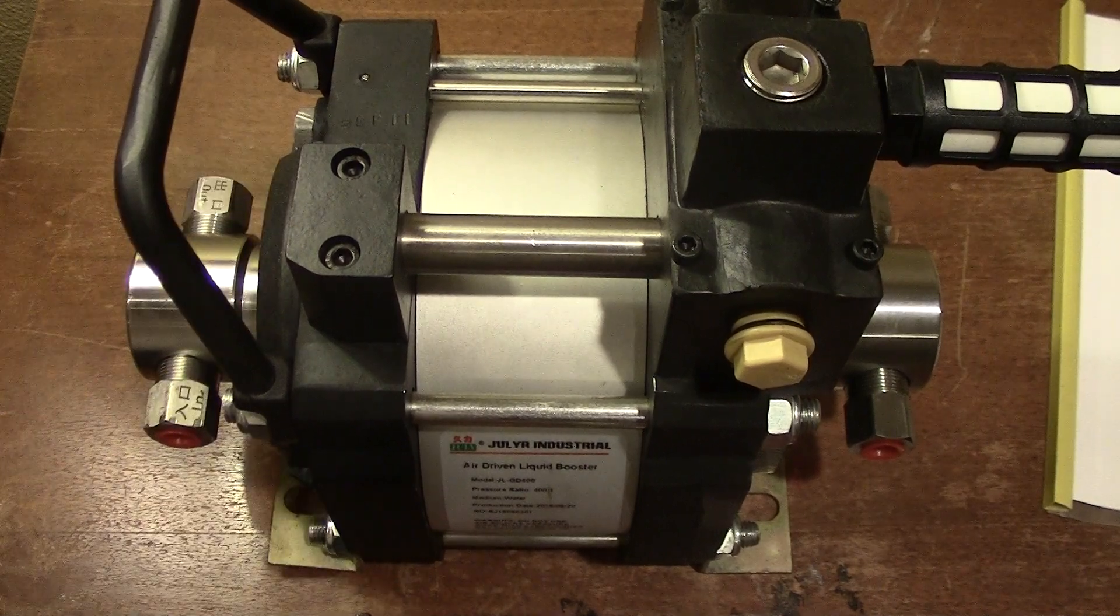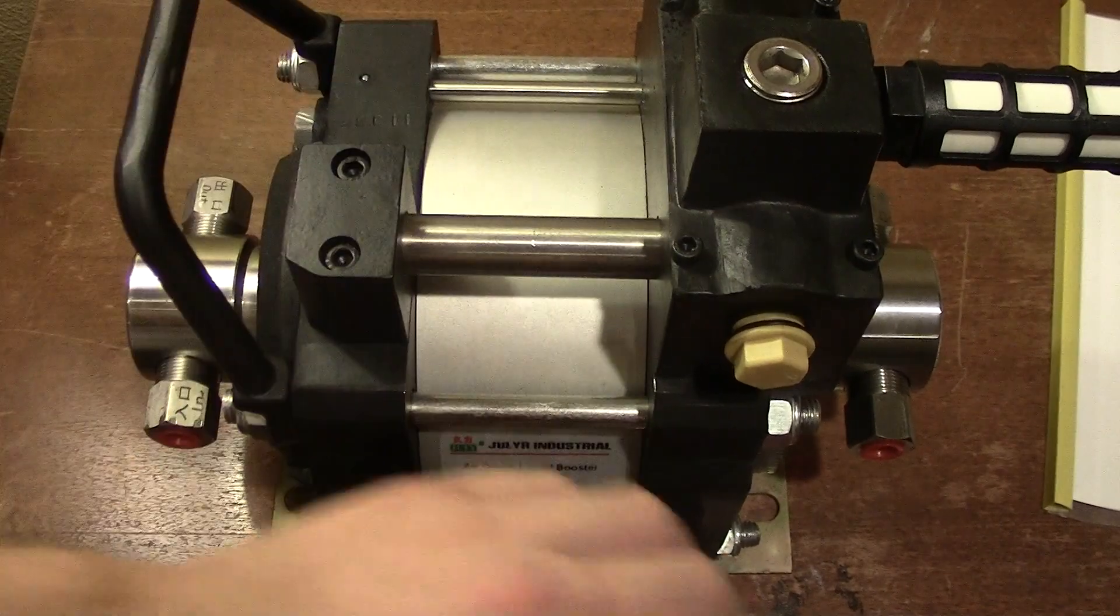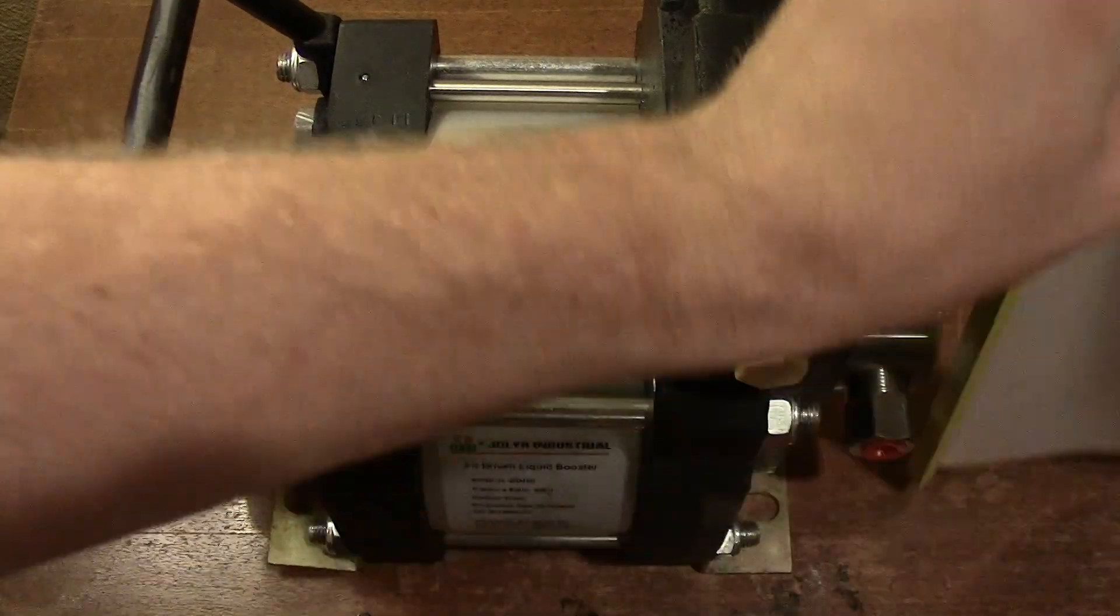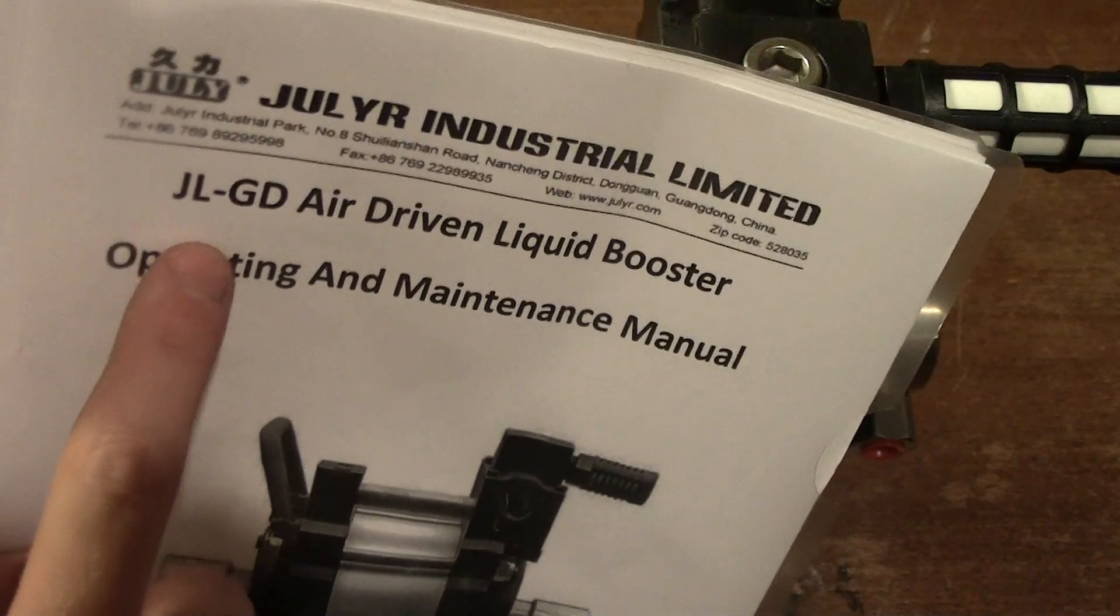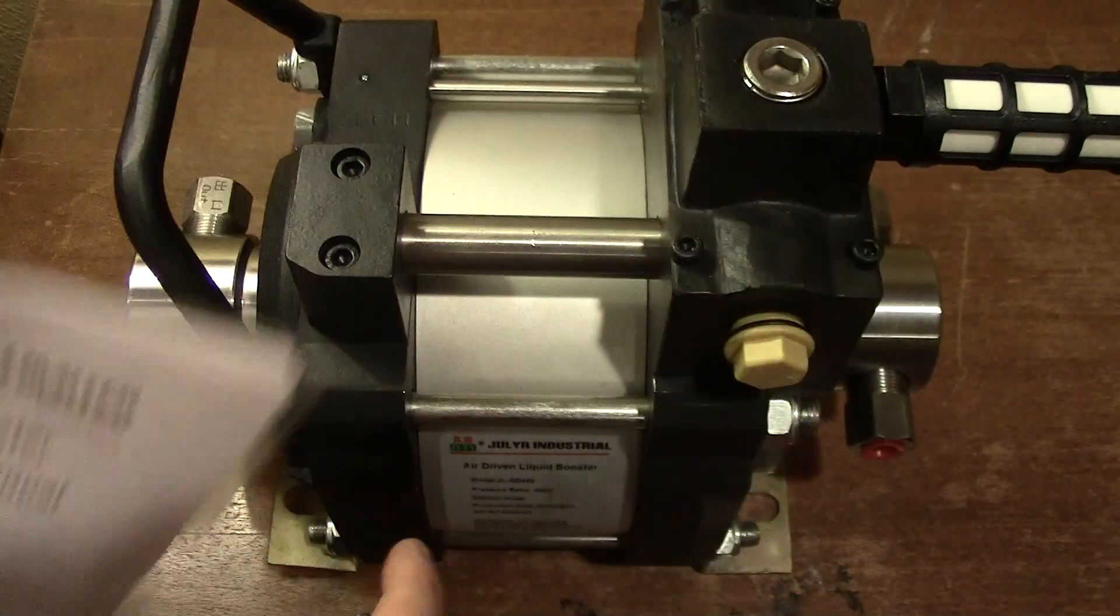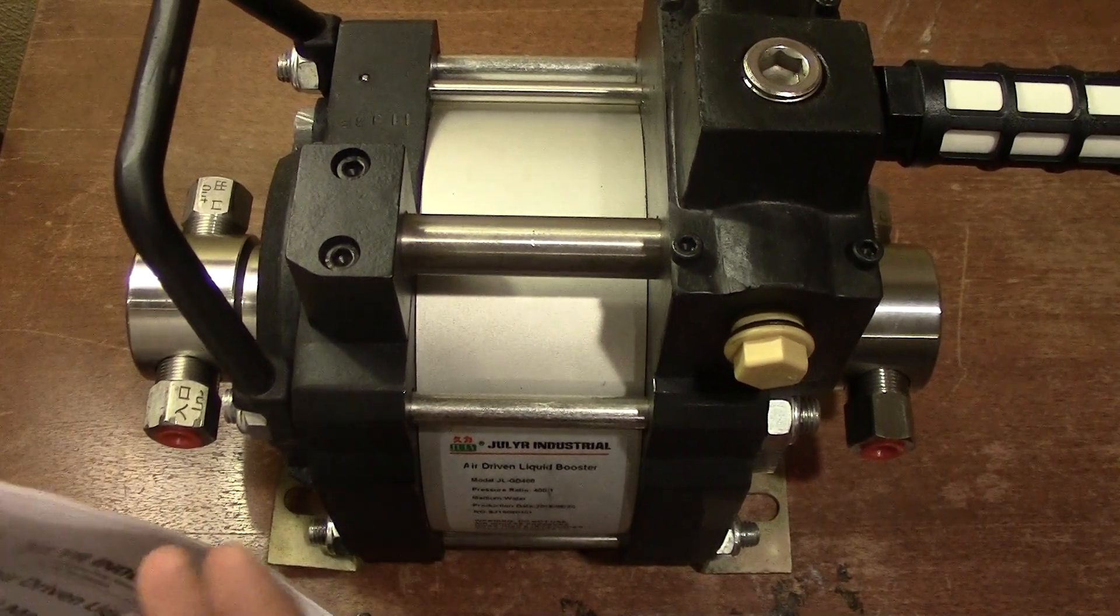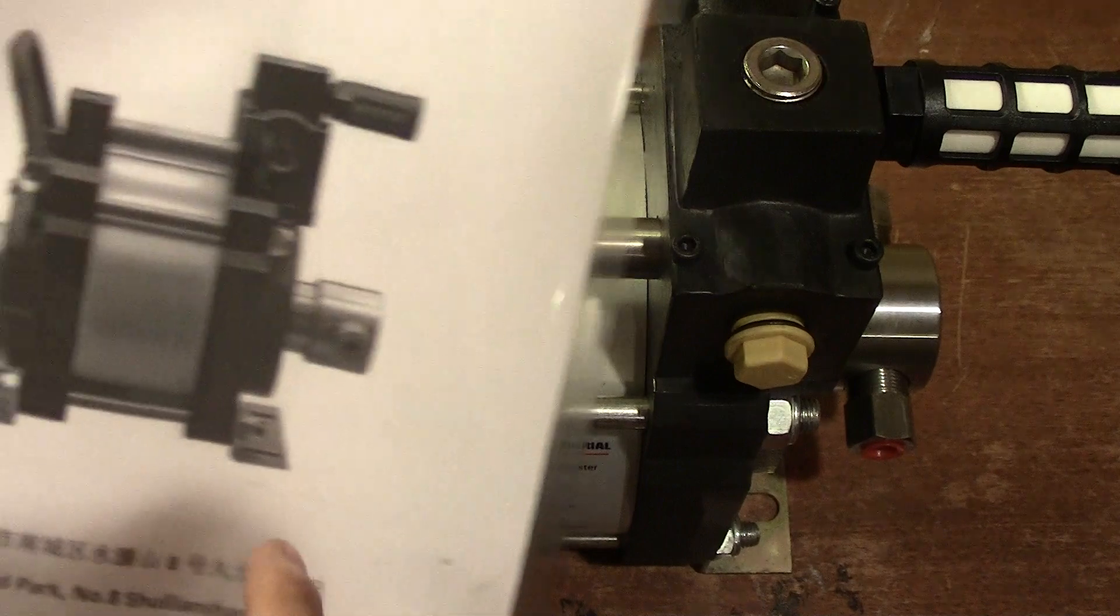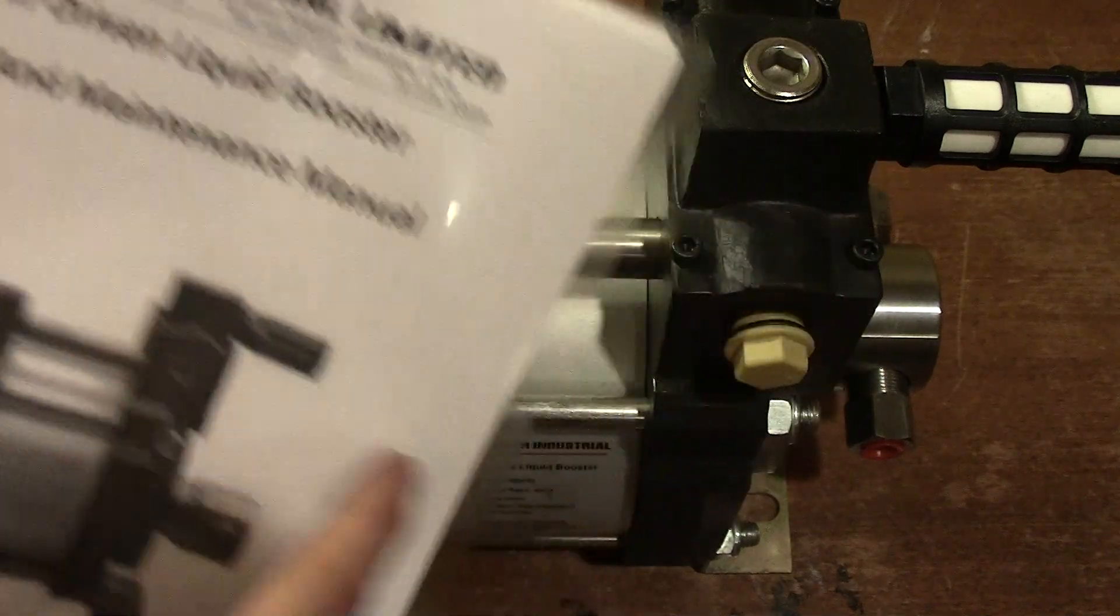This particular guy is called an air driven liquid booster. Here's the manual for it - it says JL GD, and this is a JL GD 400. 400 is the pressure ratio, and I'll go over that in a second.